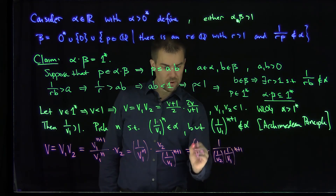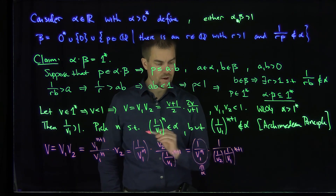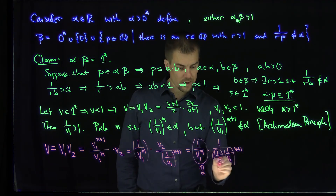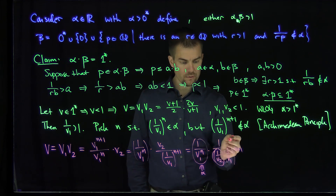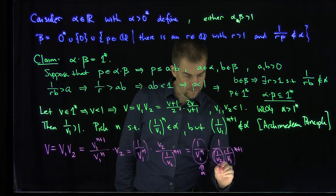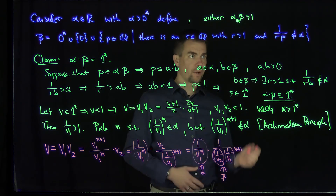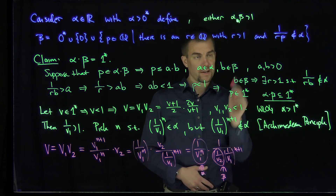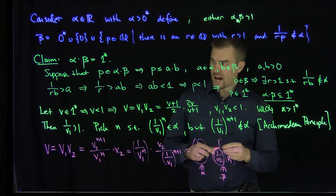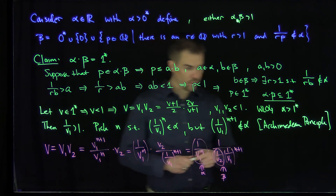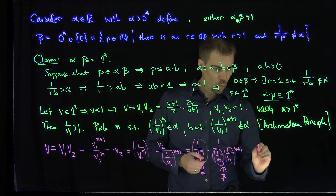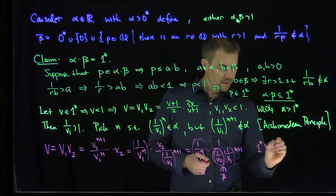The element 1/v1^n is in alpha by construction, the middle factor is larger than 1, and 1/v1^(n+1) is not in alpha — so by the definition of beta, this entire expression is in beta. Therefore v is of the form alpha · beta, meaning v is in alpha·beta. So 1* ⊆ alpha·beta.